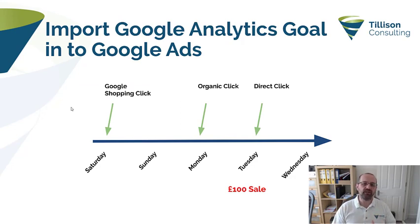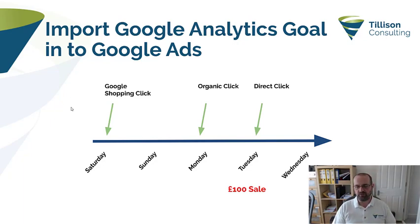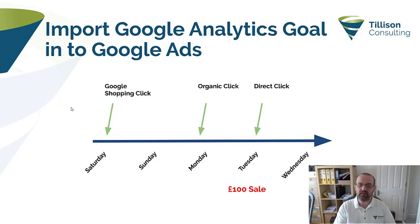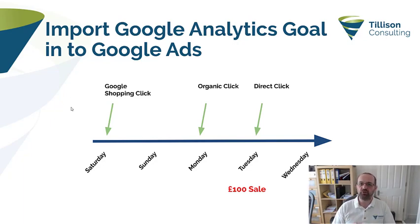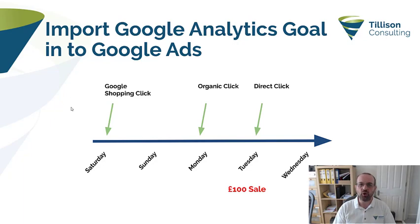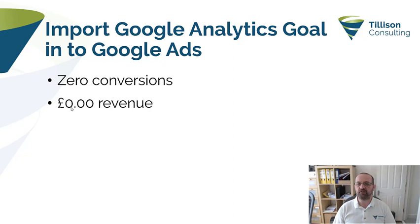Here is, in my opinion, the worst thing that you can possibly do: import the Google Analytics goal. You've configured your Google Analytics e-commerce tracking, and in Google Analytics you can see your sales and where they're coming from using last click and last non-direct click attribution. But if you import your Google Analytics goal into Google Ads rather than setting up Google Ads e-commerce tracking natively, here's what happens. We got a Shopping click on Saturday, an organic click on Monday, and a direct click on Tuesday. The big problem is that Google Analytics only passes data to Google Ads when Google Ads is the last non-direct click. So in this example, because the last non-direct click is organic and Google Ads gets no credit, in your Google Ads account there is no revenue — zero conversions, zero revenue, nothing attributed to Google Ads at all.